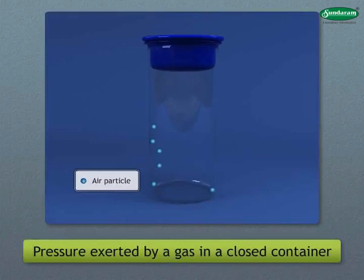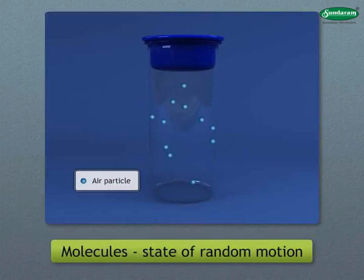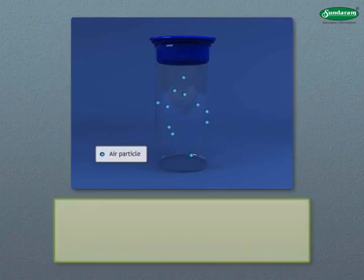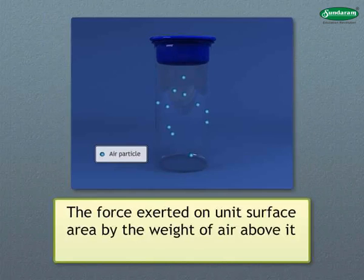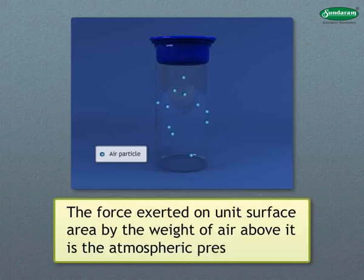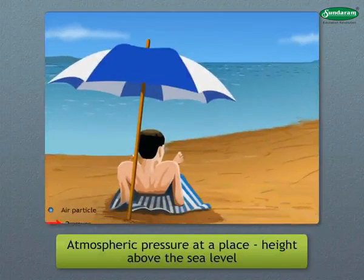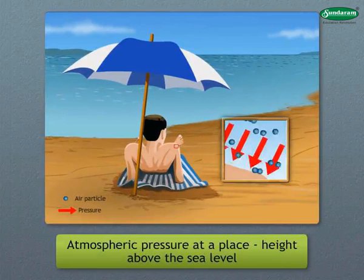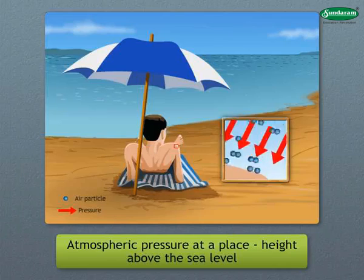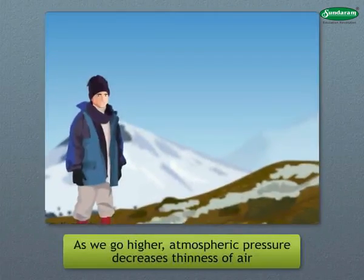The air exerts pressure in all directions. The pressure exerted by a gas in a closed container is due to the collision of gas molecules with the walls of the container. As molecules are in a state of random motion, the force exerted on a unit surface area by the weight of air above it is the atmospheric pressure. It is also the result of collision of air molecules with any surface.